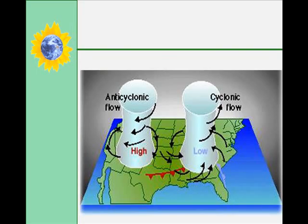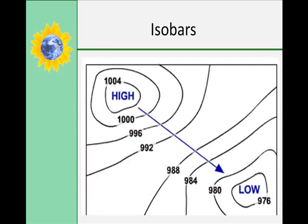Cyclones are centers of low air pressure, so air movement is upward, inward, and counterclockwise. These are associated with clouds, winds, and precipitation, with winds spiraling inward toward the low pressure center. Anticyclones are areas of high pressure; air movement is downward, outward, and clockwise, and these are associated with clear, dry weather, with winds spiraling outward away from the high pressure center. Isobar lines can be drawn on a map to show the changing air pressure values around both cyclones and anticyclones, as well as their centers.